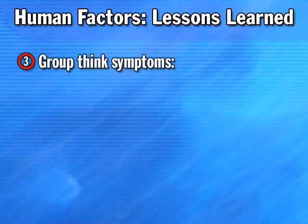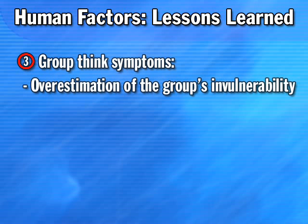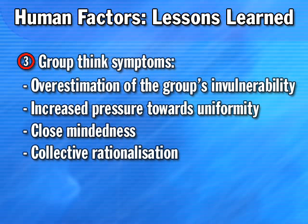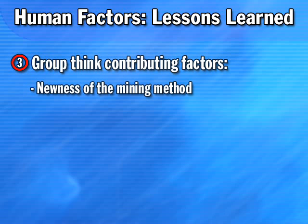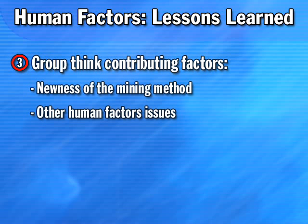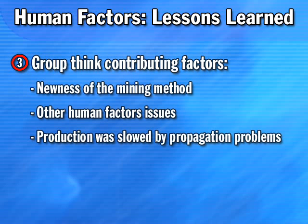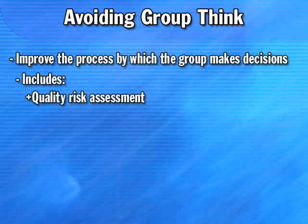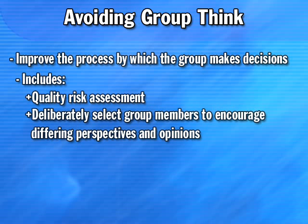Some or all of the symptoms of groupthink suggested by Janis — overestimation of the group's invulnerability, increased pressure towards uniformity, closed-mindedness, and collective rationalisation — may also have been present in the decision-making concerning air blast risk at North Parks. The newness of the mining method, combined with other human factors issues, may have created the environment for groupthink on key issues that affected air blast risk, especially when production lagged due to slow or arrested propagation. To avoid groupthink, methods should be applied to improve the process by which the group makes decisions, including quality risk assessment, as well as deliberate selection of group members to encourage differing perspectives and opinions.